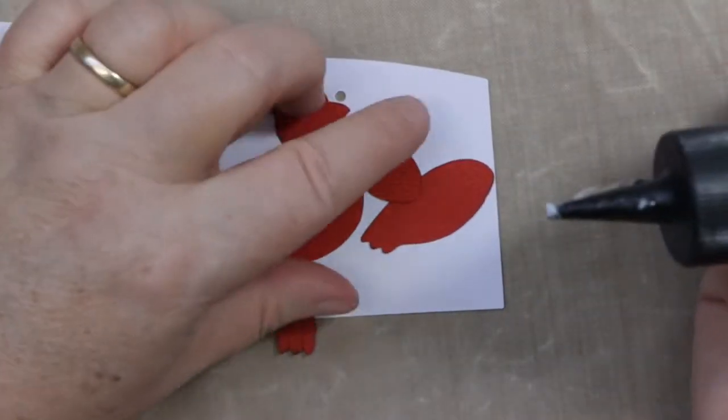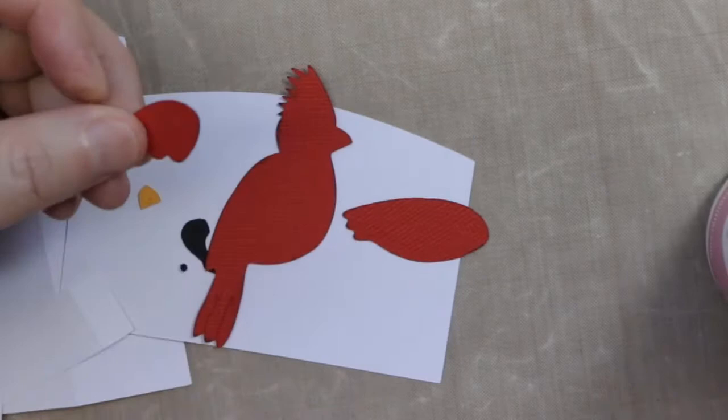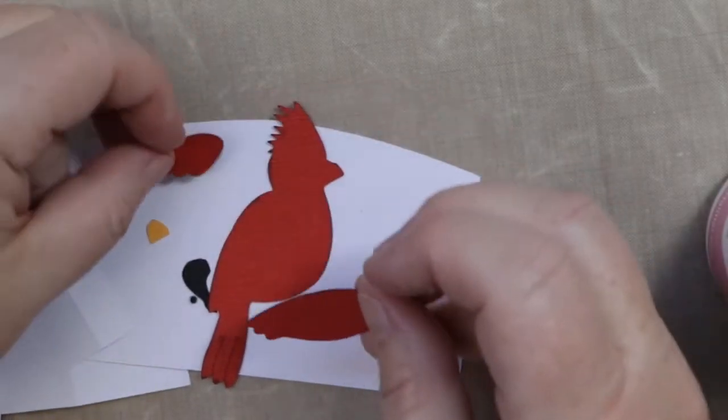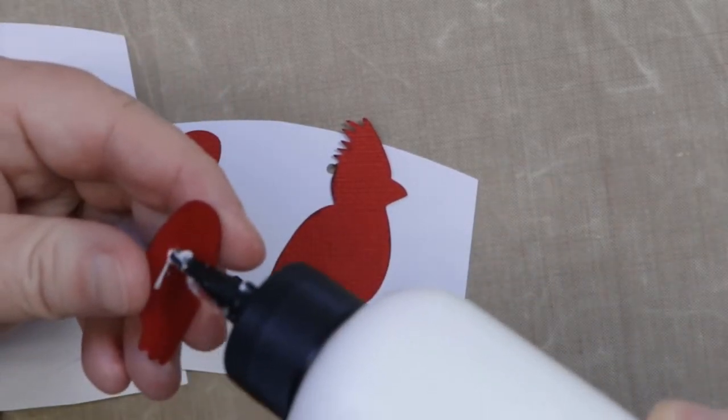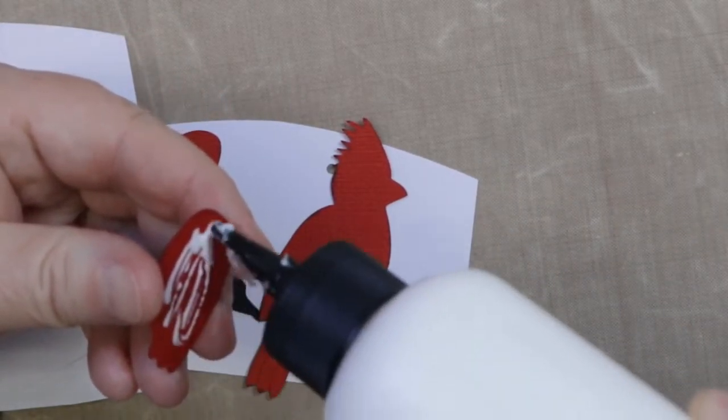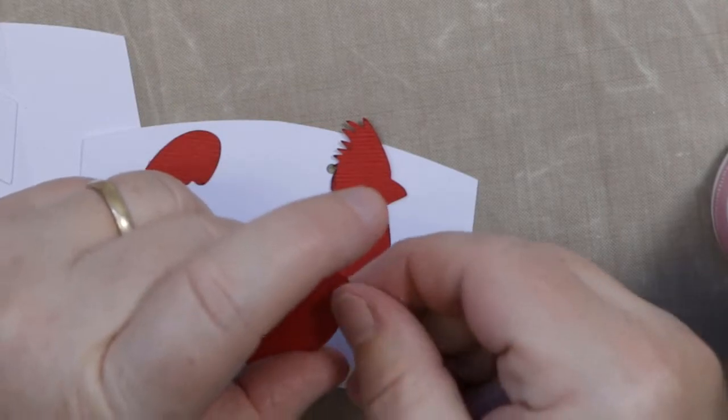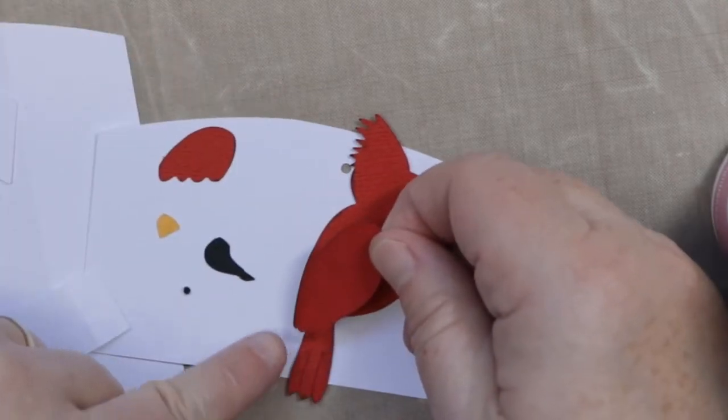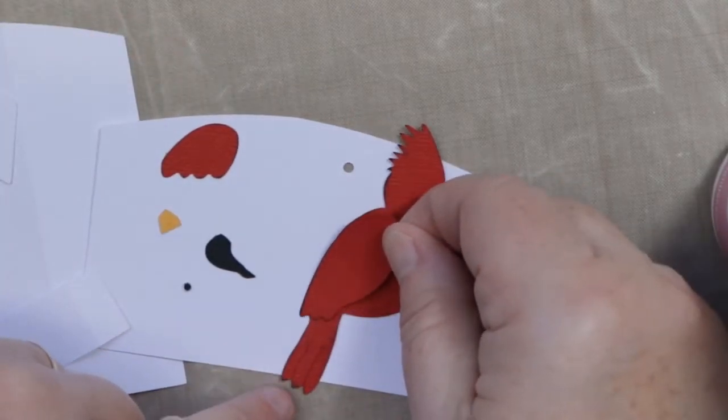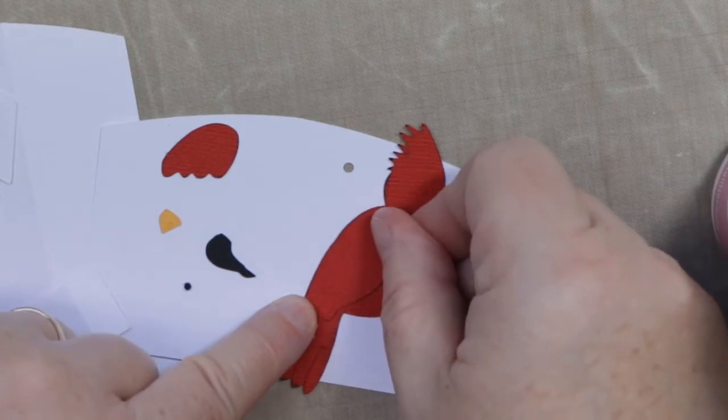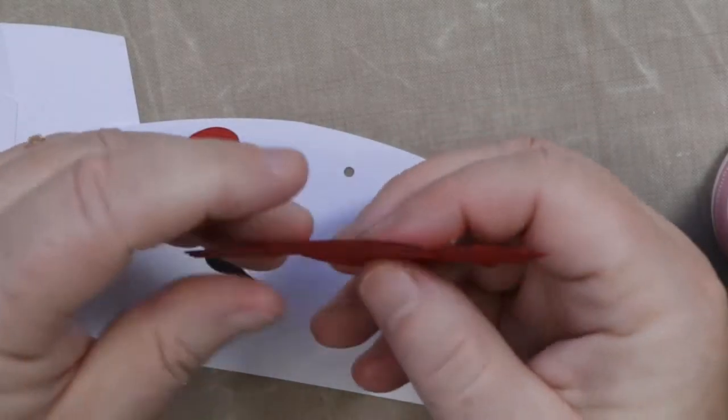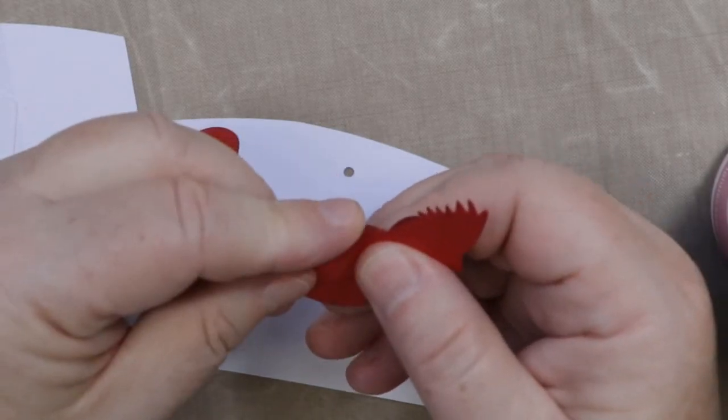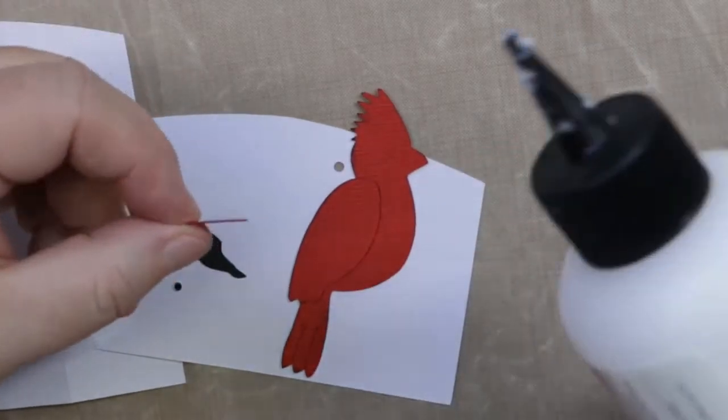So we're going to put together the cardinal. I already inked the edges of these black so they'll stand out a little bit. So the way it goes is like this. We'll do the red pieces first, and I'm using Art Glitter Glue. This is just going to line up, see this little tail feather there, a little feather. That's going to line up like that and then I'm just going to line it up on the edge there.